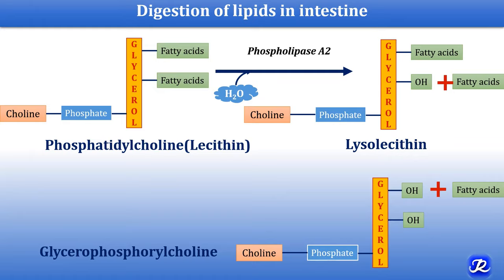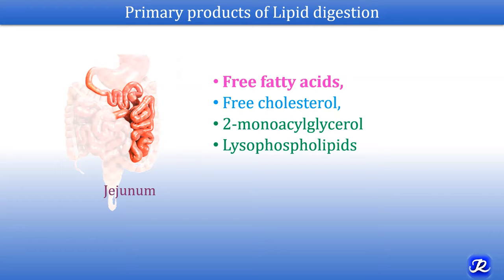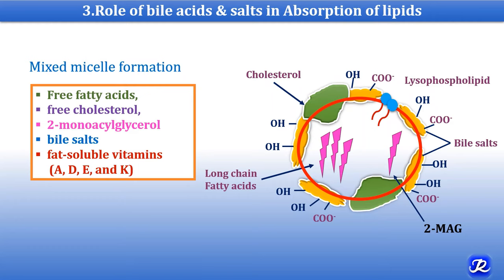The primary products of lipid digestion are free fatty acids, free cholesterol, 2-monoacylglycerol, and lysophospholipids. Bile salts are essential for absorption of lipids. They form mixed micelles with the lipids, consisting of free fatty acids, free cholesterol, 2-monoacylglycerol, bile salts, fat-soluble vitamins A, D, E and K, and lysophospholipids. In this micellar structure, bile salts are present at the periphery and lipid molecules are in the center. Mixed micelles serve as the major vehicle for transport of lipids from the intestinal lumen to the membrane of intestinal mucosal cells, which is the site of lipid absorption.